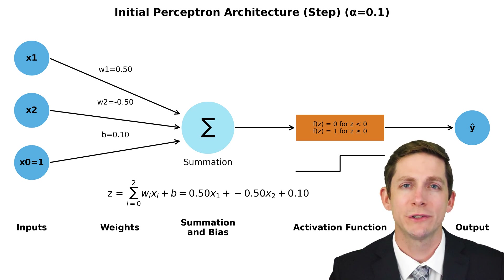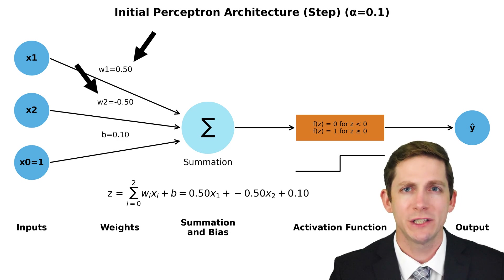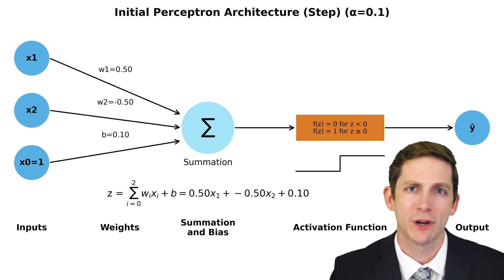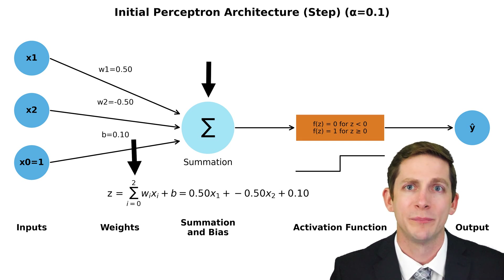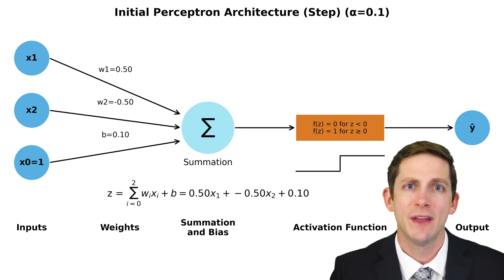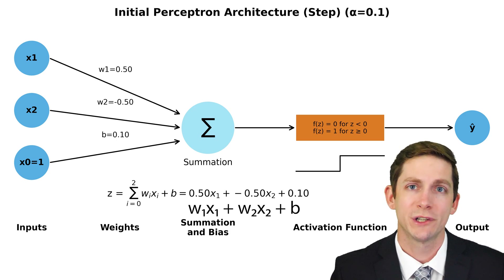Let's start with a single neuron, which is also called a perceptron. Here we have inputs x1 and x2, as well as a bias input x0, which is set to 1. Each input is connected to the neuron with a weight, which will get adjusted during the learning process. These weights are similar to biological synapses, where each synapse has a different strength, resulting in a different amount of charge transferred to the neuron. This summation, which can also be called the weighted sum or linear combination, is denoted with the letter z. The weighted sum is calculated by multiplying each input by its corresponding weight, summing these products together, and then adding a bias term. The summation is w1 times x1 plus w2 times x2 plus the bias term times 1, which is just the bias term.